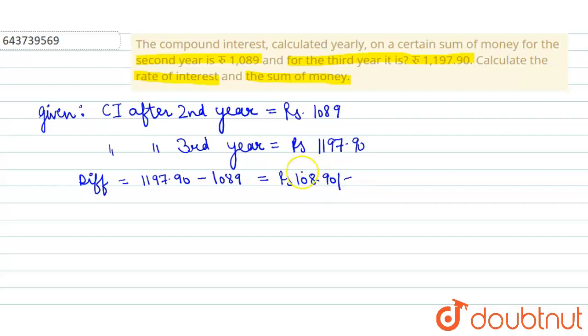This is our difference. With the help of this, we can find out the rate of interest. We take interest as 108.90 and principal amount as 1089 and time equals 1, because we have taken the difference between the third and second year which is equal to 1. So interest equals P×R×T/100. Here interest is 108.90×100/1089×1. While solving this, we will get 10%.